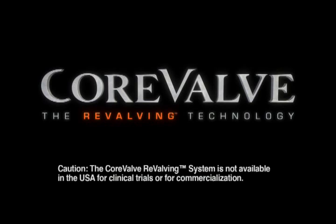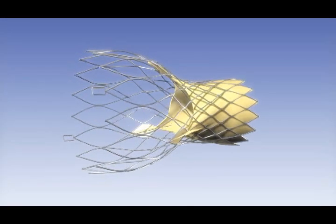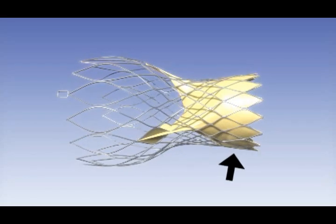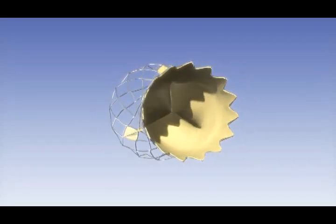Core valve revolving technology is made of four components. The CD frame has three parts. The lower part has high radial force and applies itself on the aortic annulus.